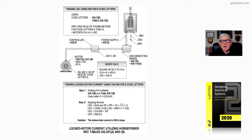With code letter G, if we refer to Table 430.7B on page 310 of the code book, we would use the maximum of 6.29 kVA per horsepower. We use the maximum because you really don't know exactly what the starting current of this motor will be based upon the lock rotor.